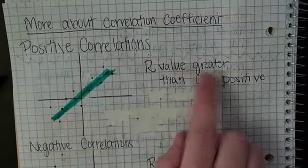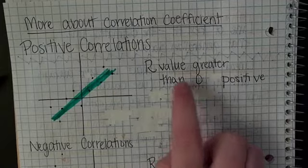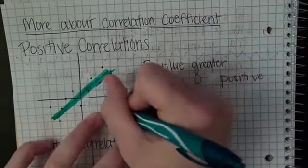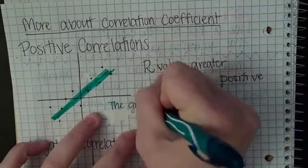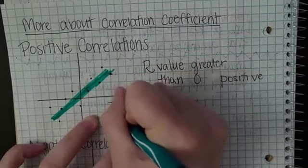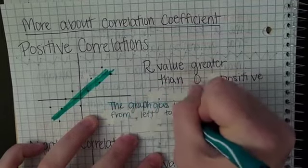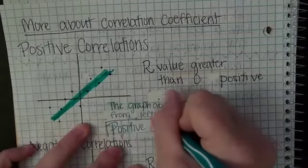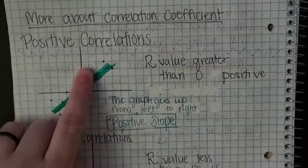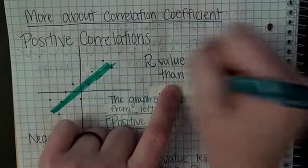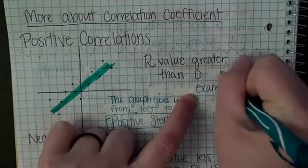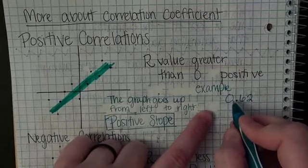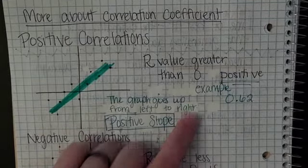This is a positive correlation. The R value is greater than zero. What that really means is the graph goes up from left to right, which means positive slope. If your line would have a positive slope, it has a positive correlation, an R value greater than zero. An example would be like 0.62. That number is positive so it shows a positive correlation.